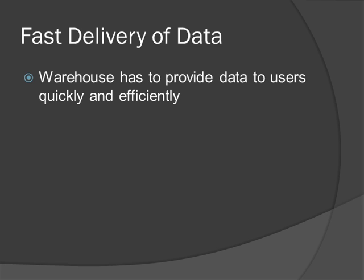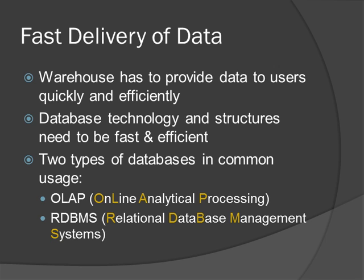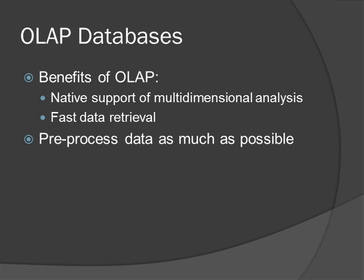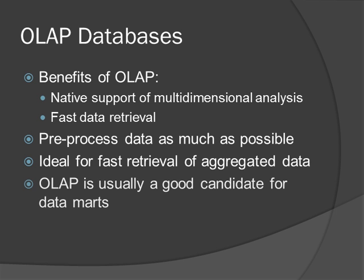To support high-speed analysis work, a data warehouse has to provide its data to business users in a timely and efficient manner. This means that the database technologies and behind-the-scenes data structures need to support fast and efficient delivery of the data. Within most data warehouse architectures, there are two types of databases used to host data marts: OLAP databases and relational databases. The benefits of an OLAP database are its native support of the multi-dimensional paradigm and its fast data retrieval capabilities. OLAP databases are efficient in handling hundreds of millions of data combinations because they pre-process as much as possible and save aggregated values in structures optimized for fast data retrieval.